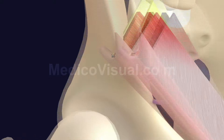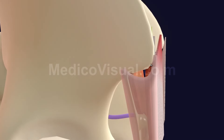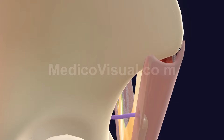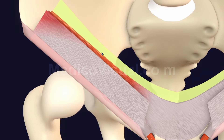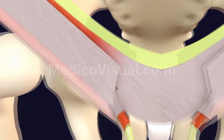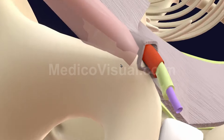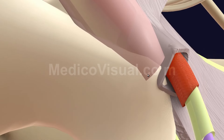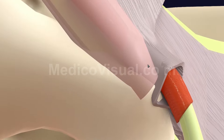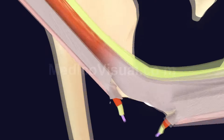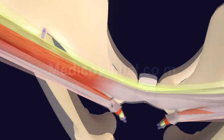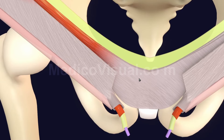The inguinal ligament has its lateral attachment at the anterior superior iliac spine (ASIS), and its medial attachment is at the pubic tubercle on the pubic bone. So that is the inguinal ligament — running from the ASIS to the pubic tubercle. Along with the inguinal ligament, there are certain other important related ligaments you must know.